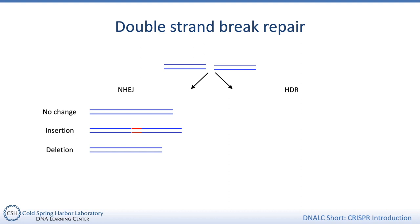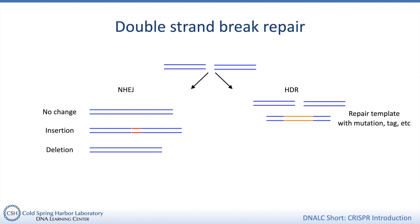So this is a way that scientists can disrupt a gene by using NHEJ in the cell. In HDR, the cell uses a homologous — identical or at least very close to identical — strand of DNA as a template to repair the break. Scientists can provide a template that either has a specific mutation they'd like to introduce, or a template that has an added bit of DNA, something like a tag they'd like to be included with a protein, which will be incorporated into the DNA.